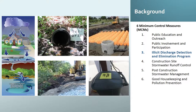MCM1 is public education and outreach. MCM2 is public participation. MCM3 is illicit discharge detection and elimination program. MCM4 is construction site stormwater runoff control. MCM5 is post-construction stormwater management, and MCM6 is good housekeeping and pollution prevention. Today we're specifically going to address MCM3.